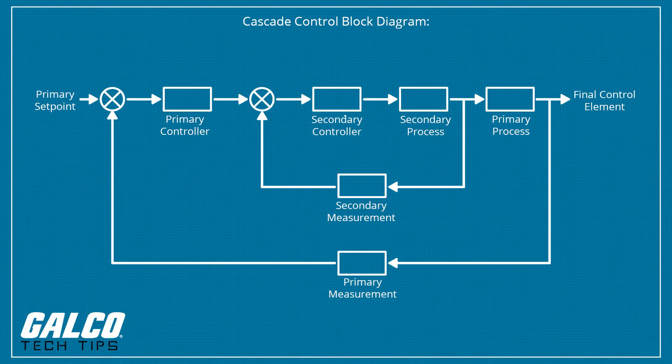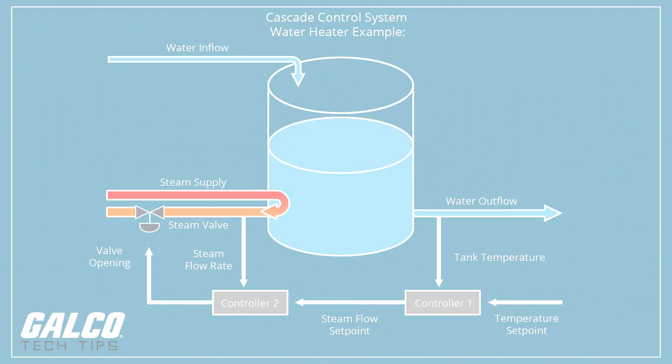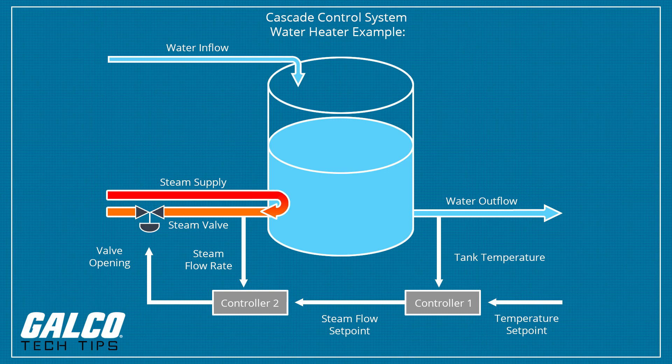However, a Cascade Control system is inherently more complex than a single-loop control system as more equipment and instruments are required, which in turn can drive up the costs of installation. Tuning Cascade controllers also becomes more difficult as the setpoint is changed and additional parameters are added. The simplest example of a Cascade control scheme involves two control loops that monitor two measurement signals to control one primary variable.